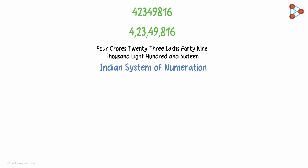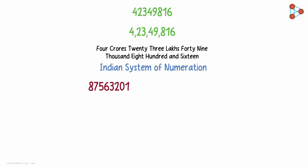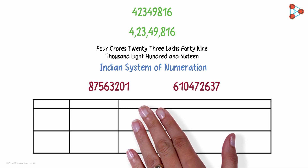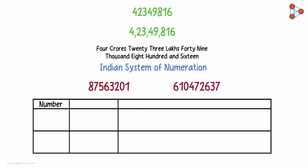Now I will give you 2 numbers. Using the Indian system of numeration, I want you to mark commas and also write the numbers in words. Here are your numbers. Let's form a table — we have the numbers in the first column, and 2 more columns for you to write the numbers using commas and then in words.